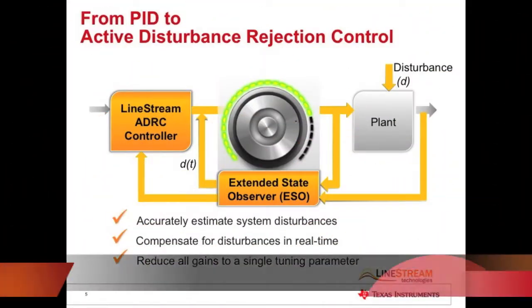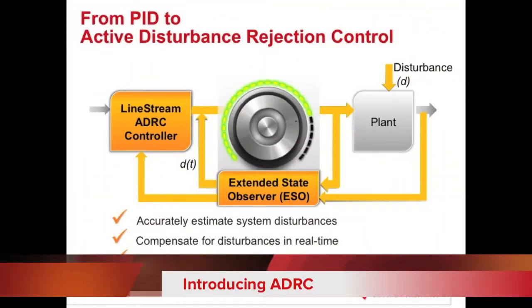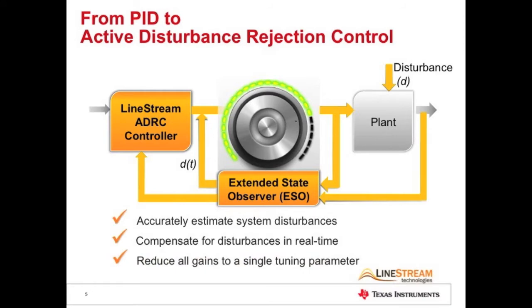Active Disturbance Rejection Control is an advanced algorithm that can replace PI control. This controller accommodates for a high degree of model uncertainties. It has an extended state observer that accurately estimates system disturbances.